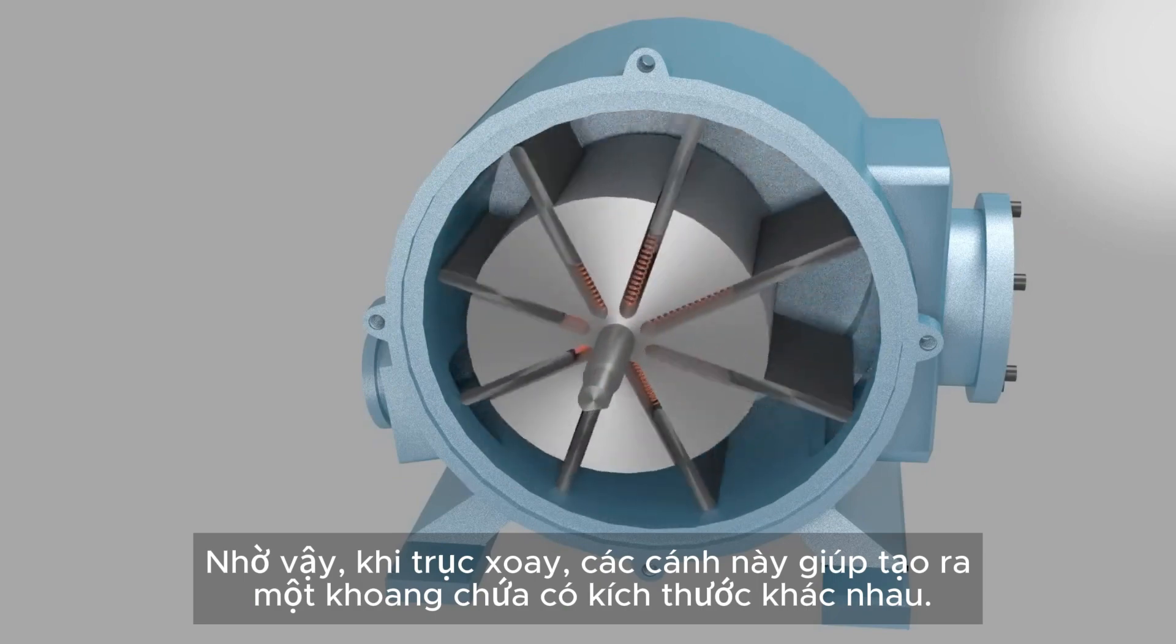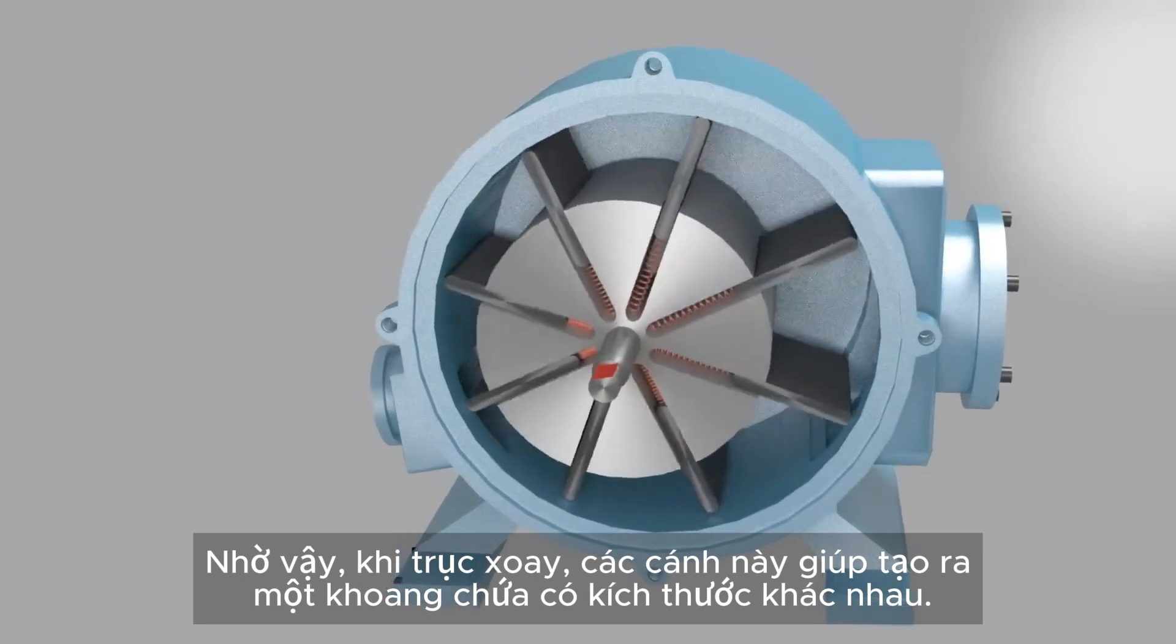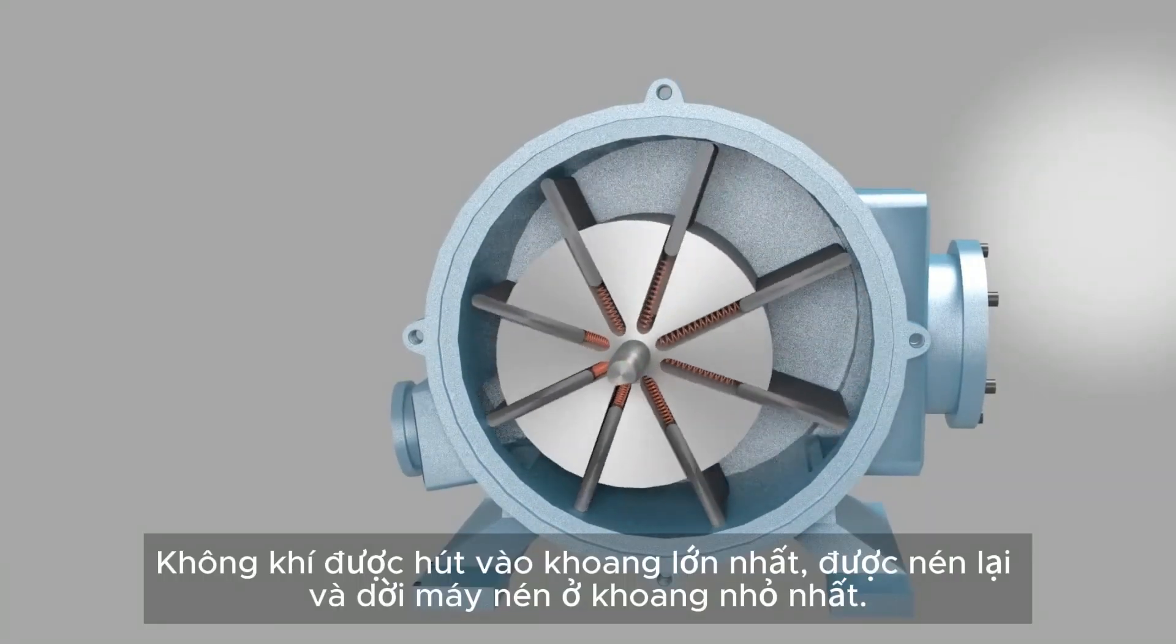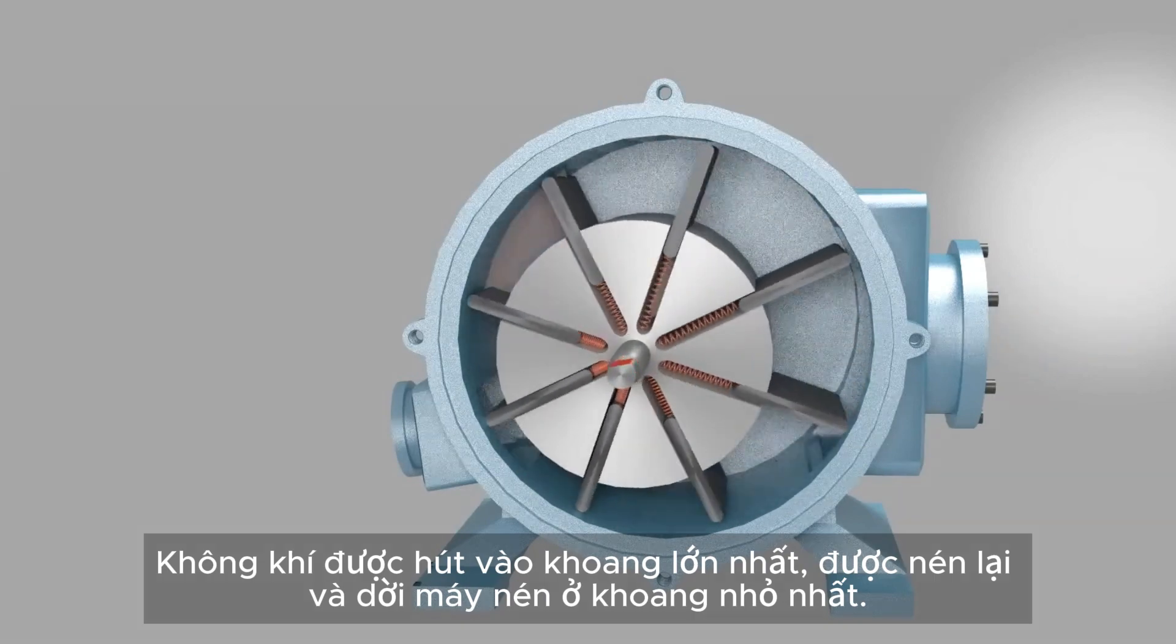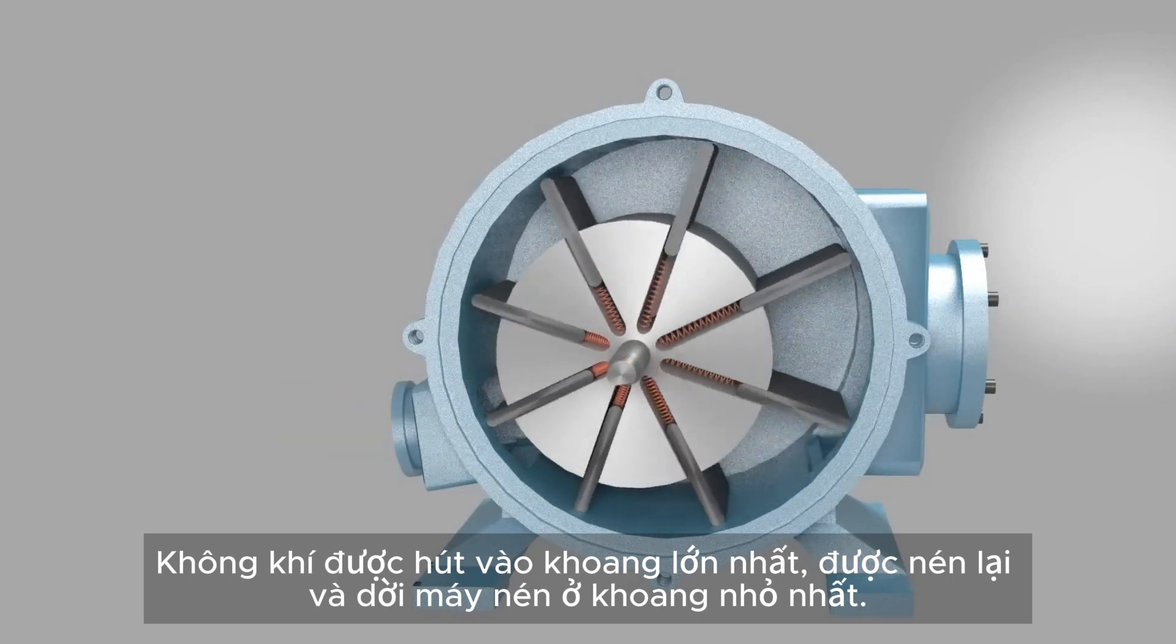So when the shaft rotates, these vanes create chamber of variable sizes. Air is sucked into the largest chamber, being compressed, and leaves the compressor at the smallest chamber.